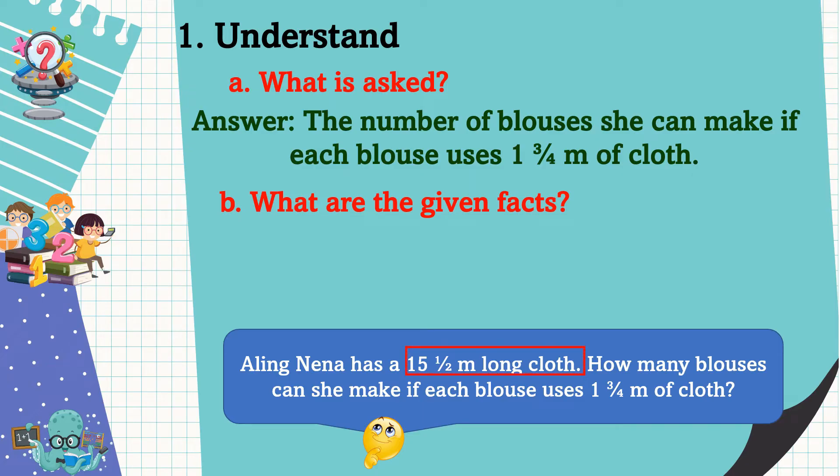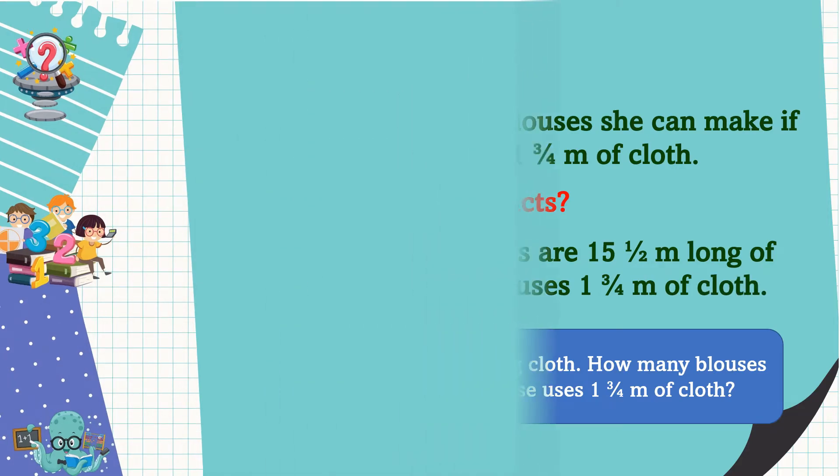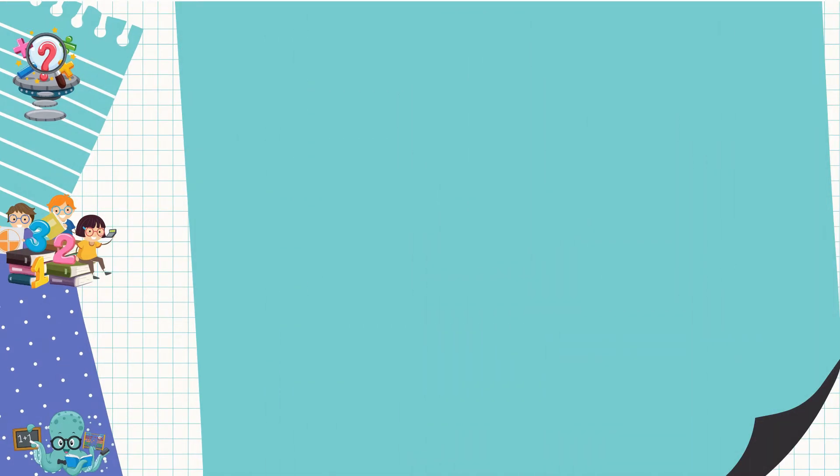Next, we should know what are the given facts. What are the given facts in this problem? Alright, the given facts are 15 and 1/2 meters long of cloth and each blouse uses 1 and 3/4 meters of cloth. We already understand the problem. What is the next step?